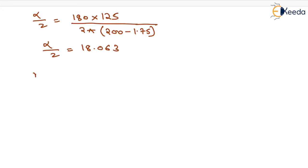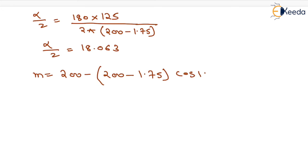Now we calculate the setback distance: m = 200 − (200 − 1.75) × cos(18.063). On solving this, we get the setback distance m as 11.52 meters.